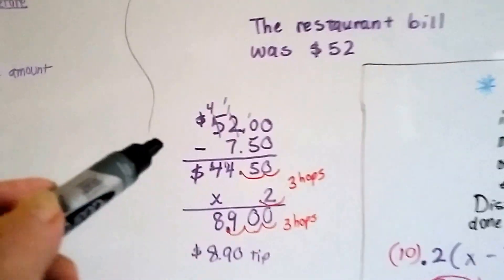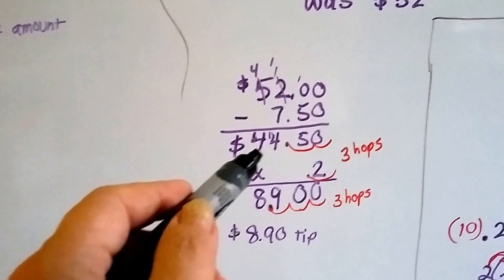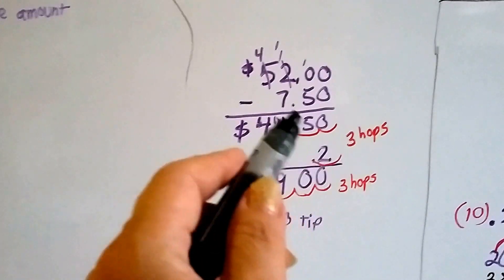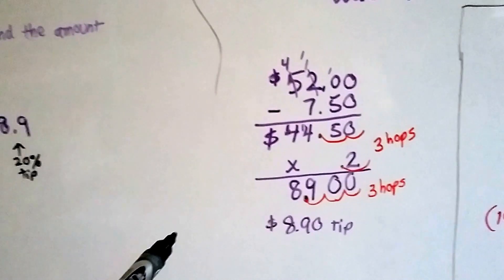$52 minus the $7.50 coupon is $44.50. If we multiply this by 20% to get the tip, it's going to be $8.90. It worked out perfectly.